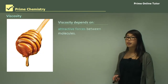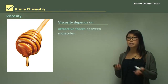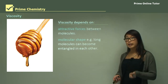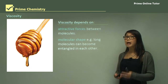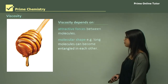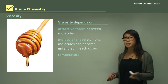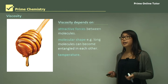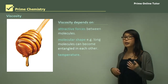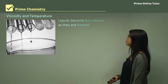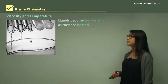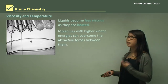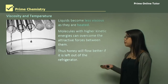Viscosity depends on three main factors: attractive forces between molecules — so hydrogen bonding increases viscosity while dispersion forces decrease it; molecular shape — long molecules get tangled up making it harder for them to flow past each other; and temperature — if we increase the temperature we decrease the viscosity, because the added energy makes molecules move more, allowing them to untangle. When heated, liquids become less viscous because higher kinetic energy can overcome intermolecular forces.